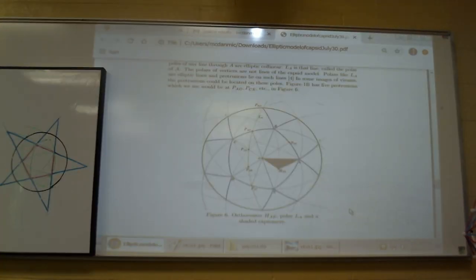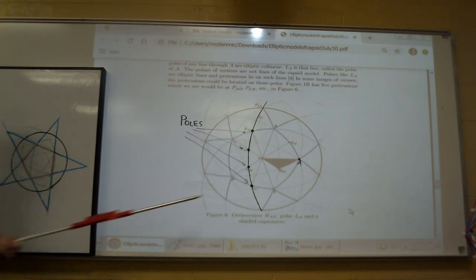Here's an enhanced version of our model. Our lines BE and CD meet at right angle at the boundary. This means that each elliptic line which contains the side of a triangle also contains the altitude of another triangle. Each elliptic line in our model contains the pole of another line. A pole is any line through the pole given on a line is perpendicular to the given line. All the poles of any line through A are elliptic collinear. L_A is that line, called the polar of A. The polars of vertices are not lines of the capsid model. Polars like L_A are elliptic lines and protrusions lie on such lines.